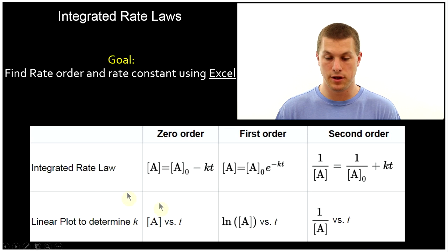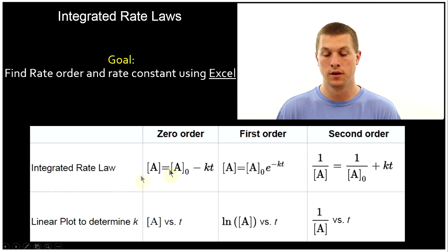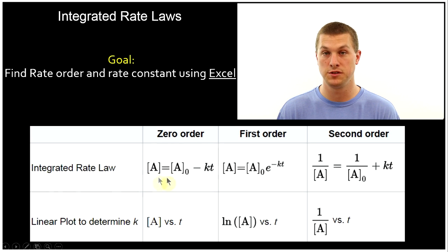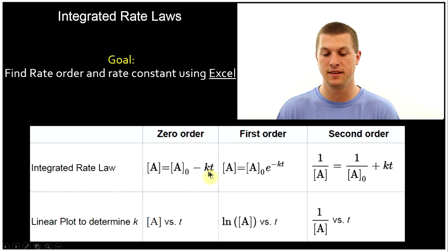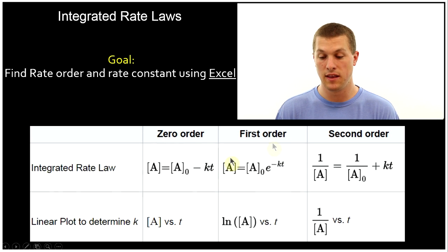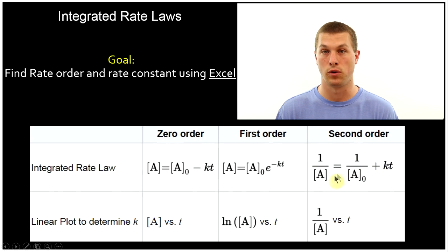If you take a look here, we have integrated rate laws for zero-order reactions, where the concentration of our chemical species equals the initial concentration minus KT — K being our rate constant and T being time. We also have equations for first-order and second-order reactions.